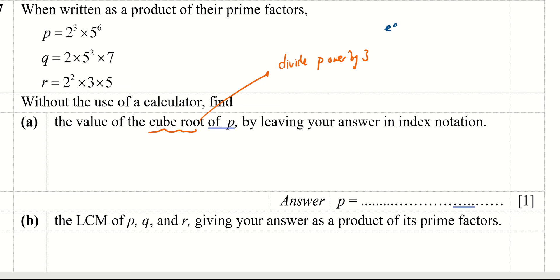For example, if I have cube root of 27, I can work it out as cube root of 3 to the power of 3. To remove the cube root, I divide all the powers by 3, so the answer will be 3 to the power of 1.